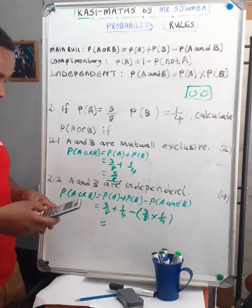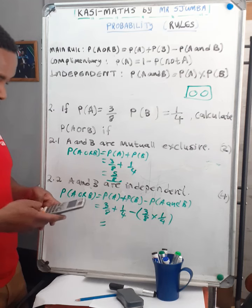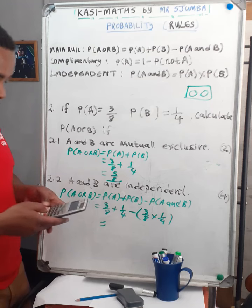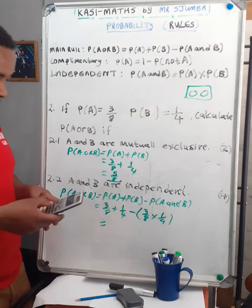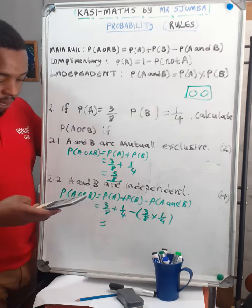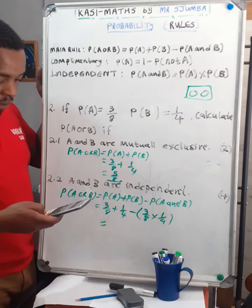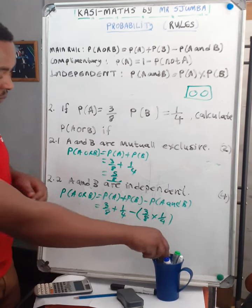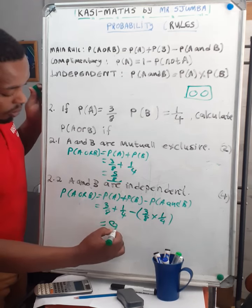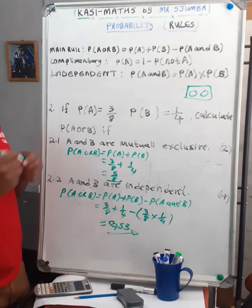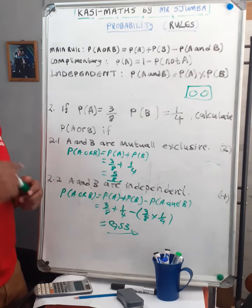So we have 3 over 8 plus 1 over 4 minus 3 over 8 multiplied by 1 over 4. The answer is 17 over 32, which is approximately 0.53. This is how we apply the rules.